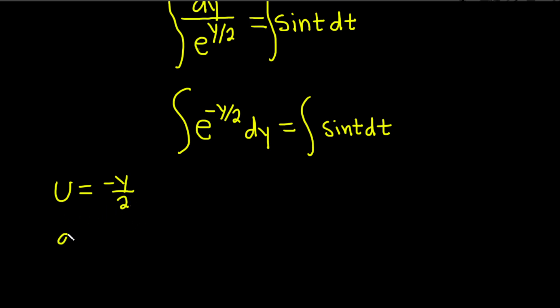And then so du, taking the derivative of both sides the derivative of y is 1. So we just get negative 1 half dy. And we don't have a negative 1 half in our integrand so we need to get rid of this because our goal is to make this look like what's up here. So now we'll multiply both sides by negative 2. When we do that we get negative 2 du and over here it will cancel so we just get dy.